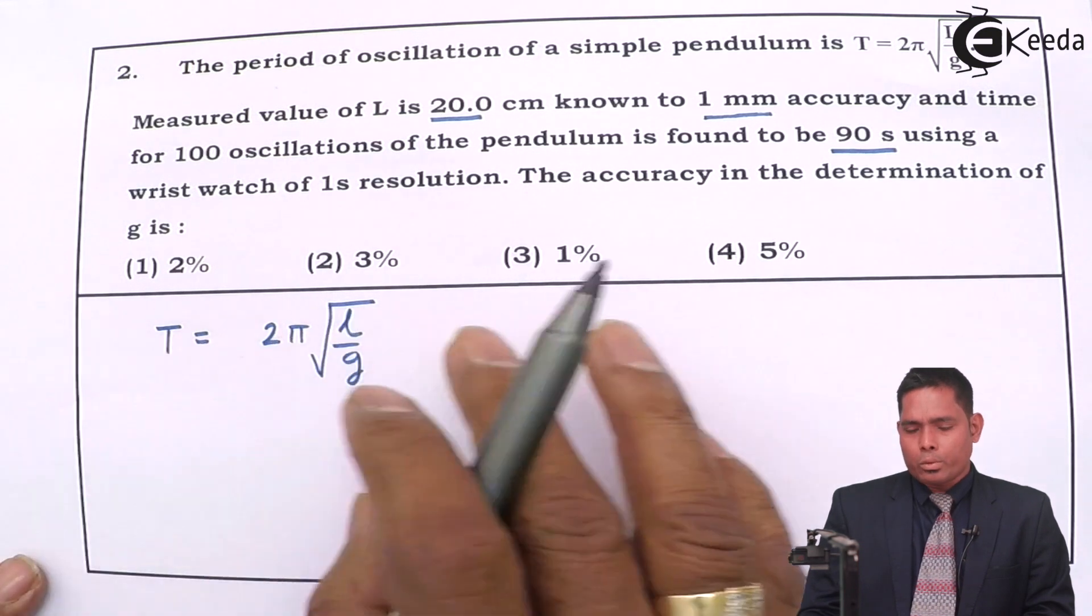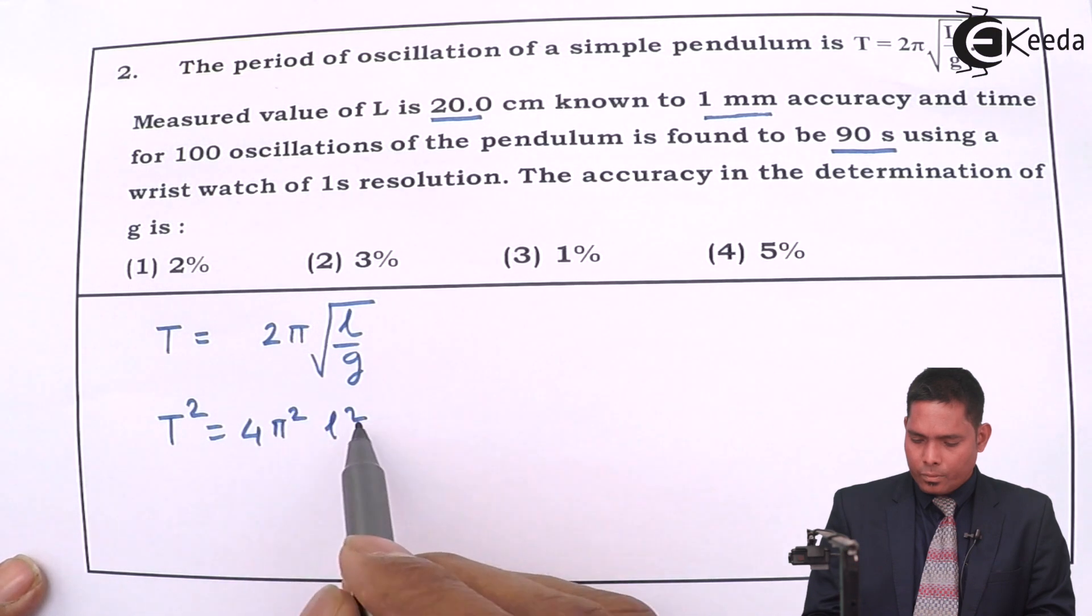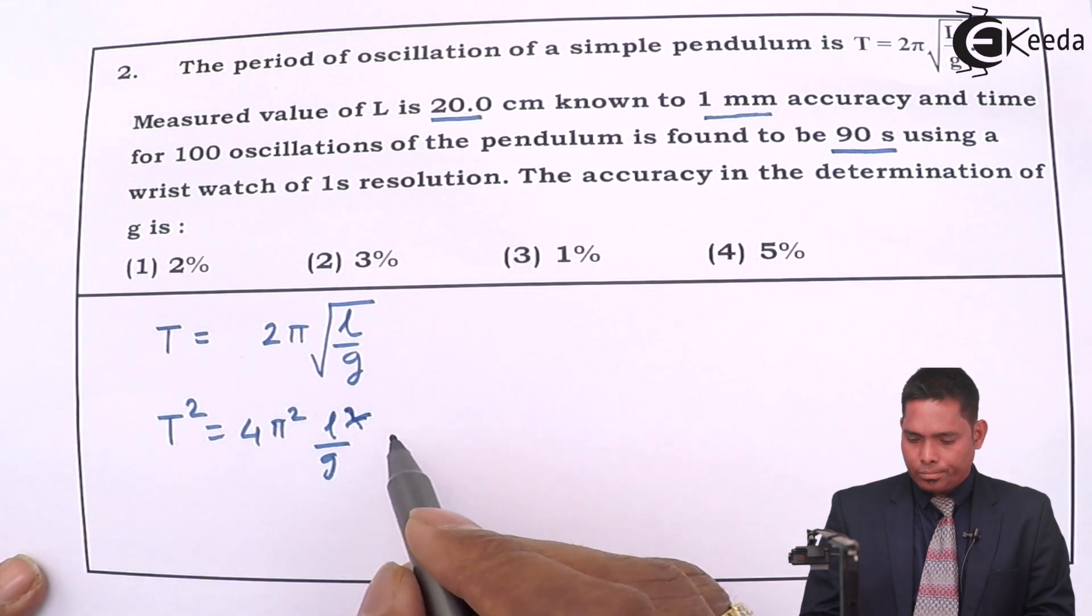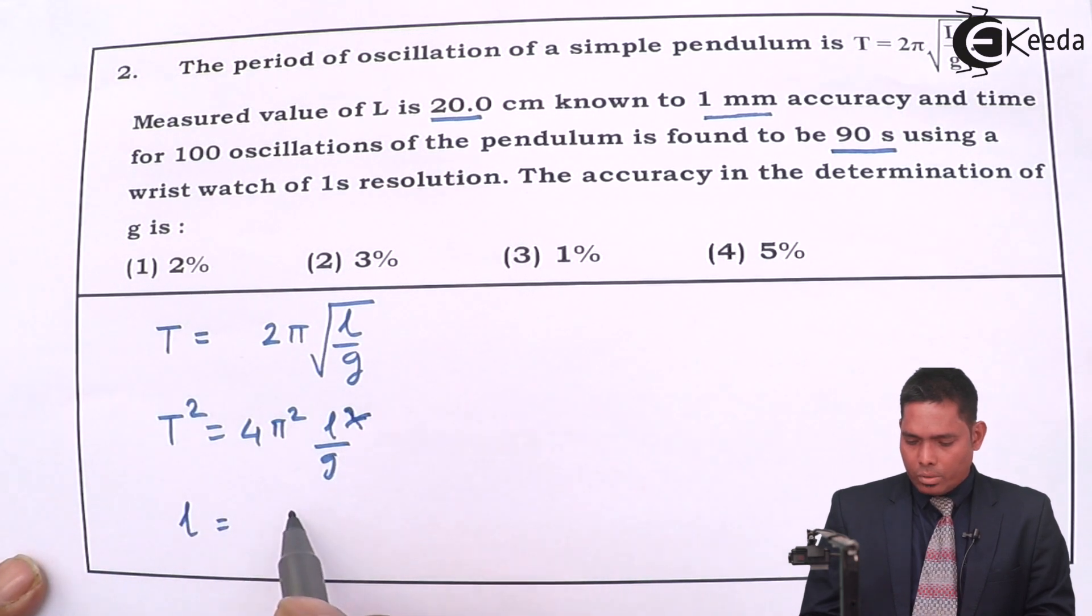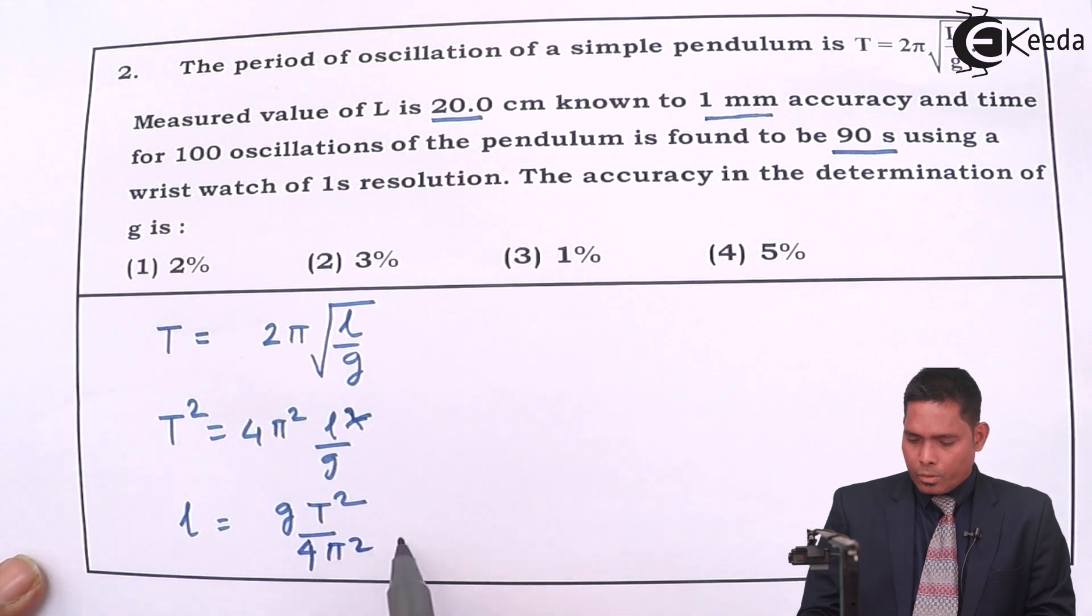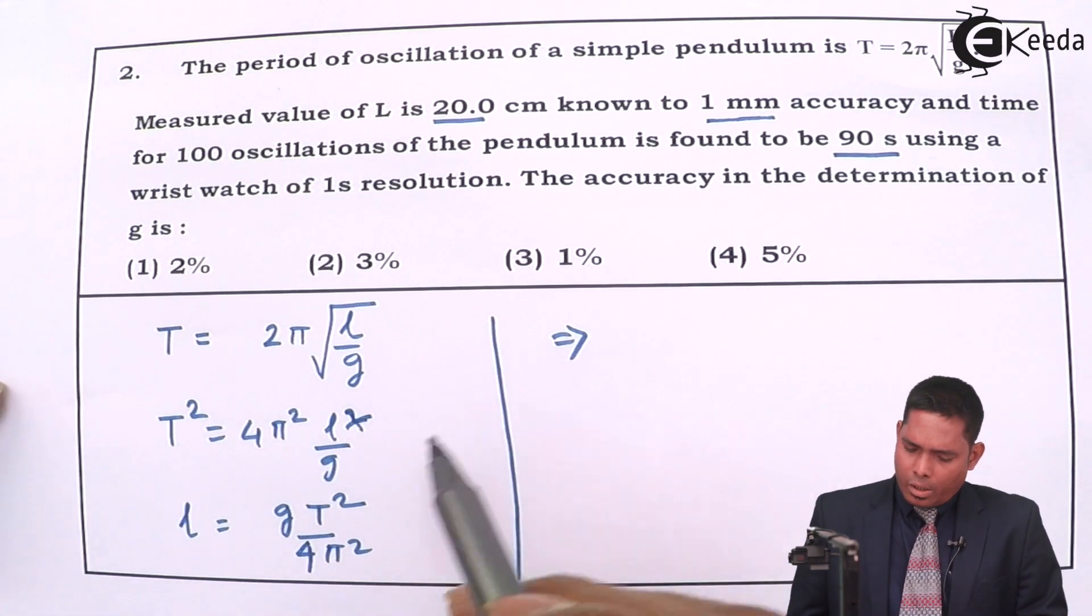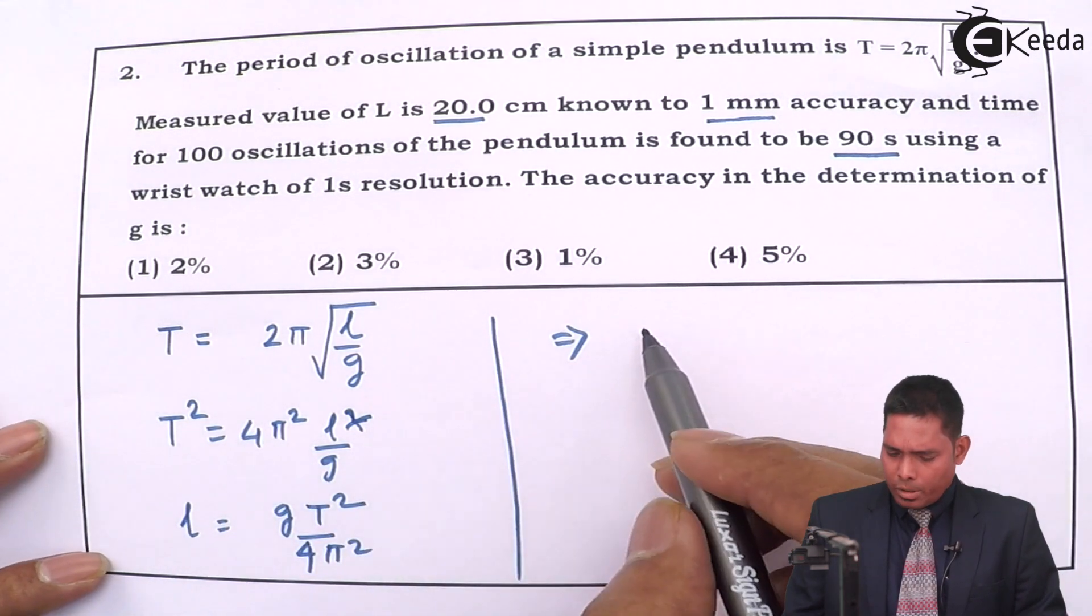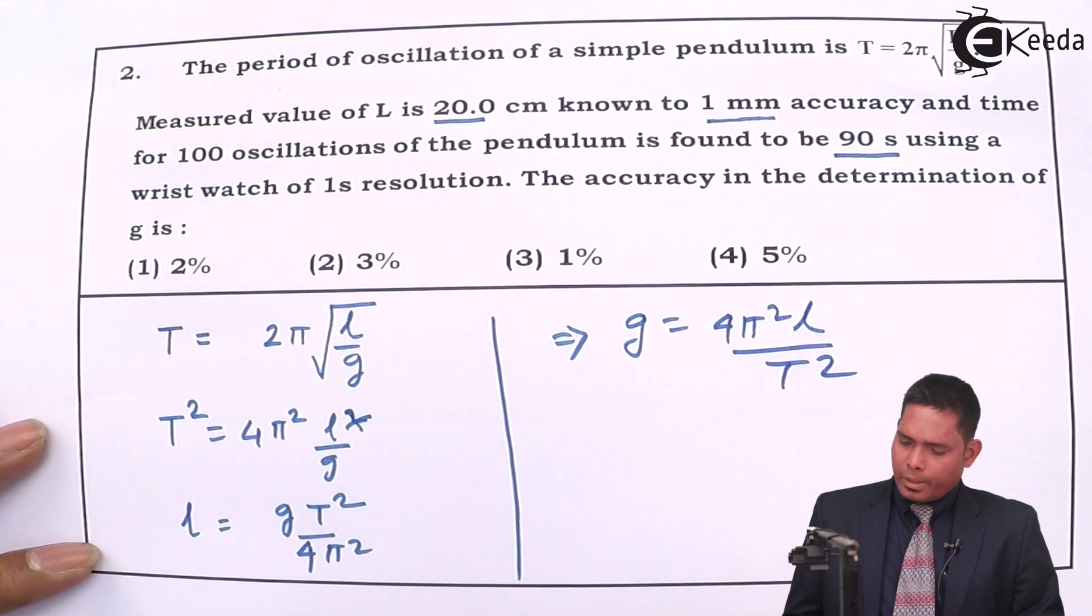Square both sides of the equation. T² = 4π²l/g, so from here I'll write l equals g·T² divided by 4π². From here we are interested in g, so therefore g will be 4π²l divided by T².